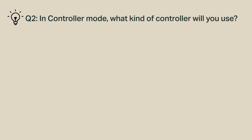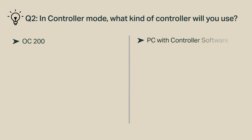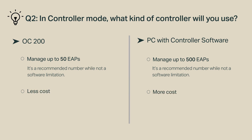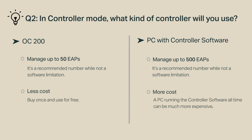In Controller mode, what kind of controller will you use — an OC200 or a PC with controller software? An OC200 can manage up to 50 EAPs, while a PC with controller software can manage up to 500. It's a recommended number, not a software limitation. Besides, an OC200 costs less than a PC running the controller software all the time.